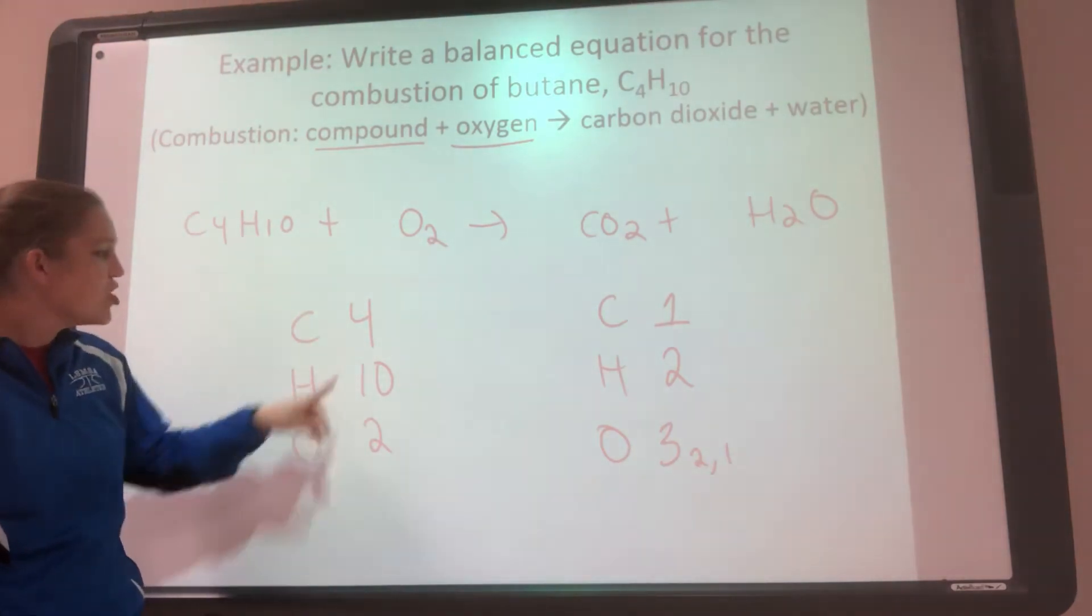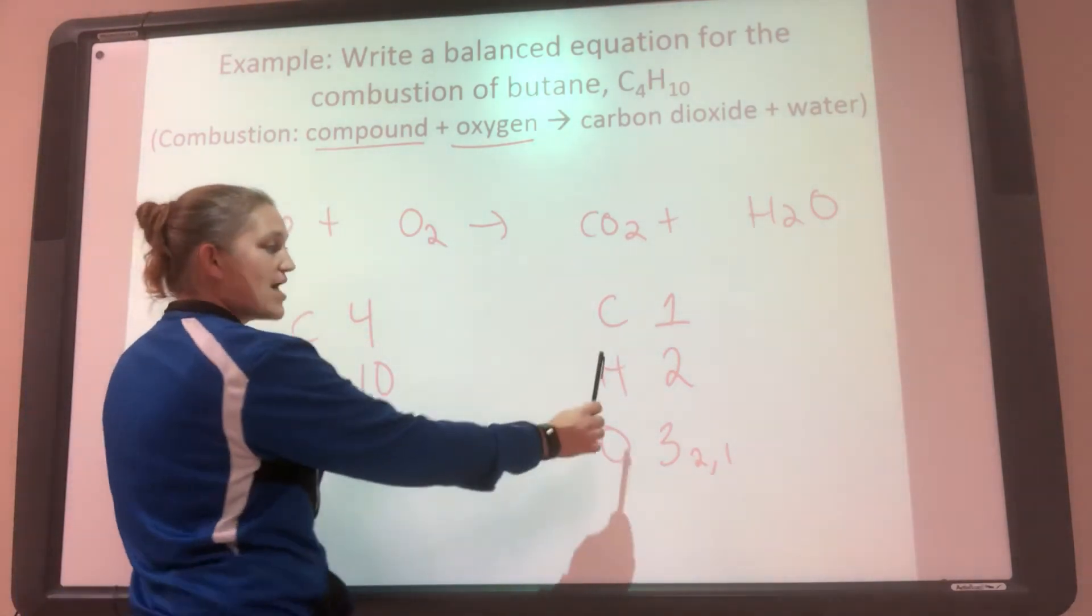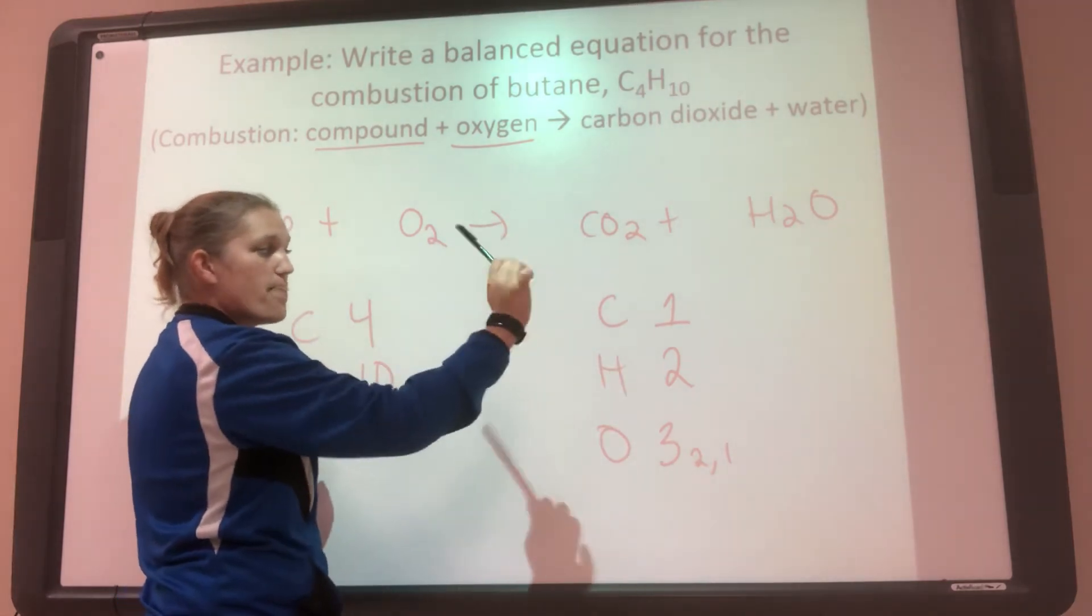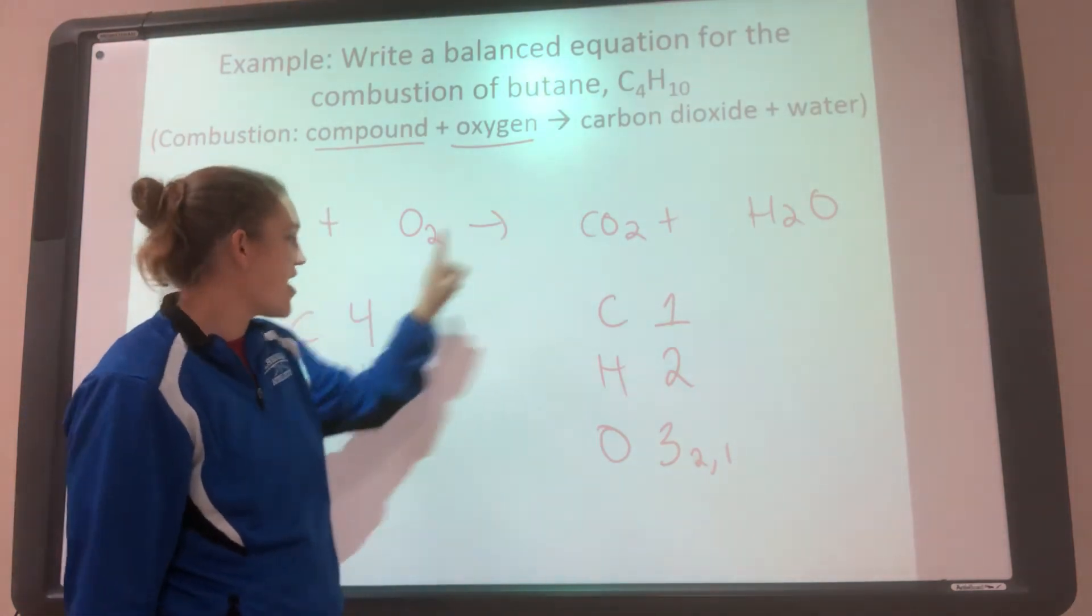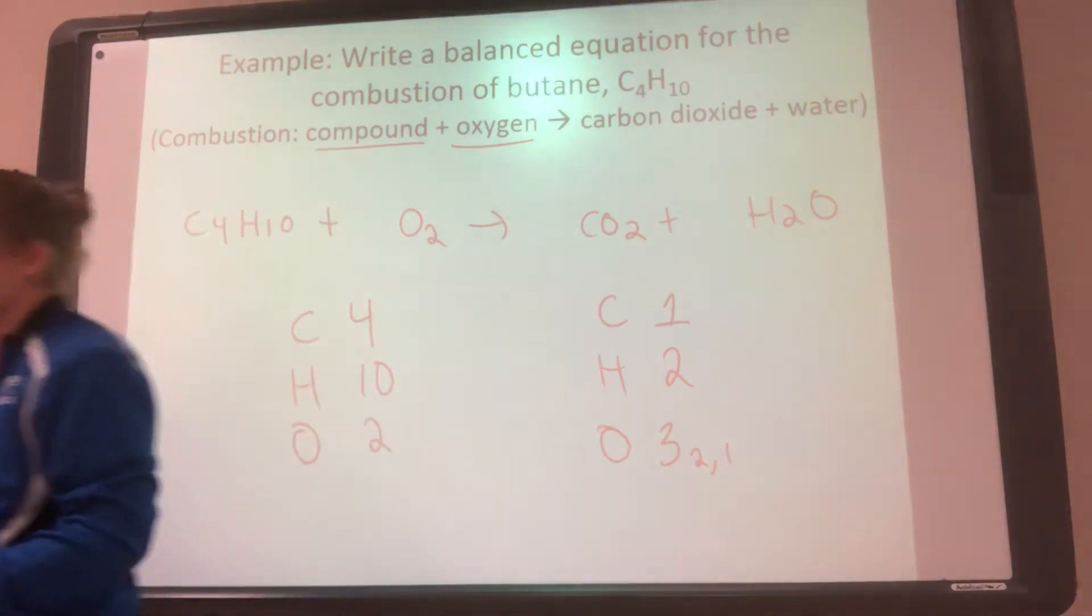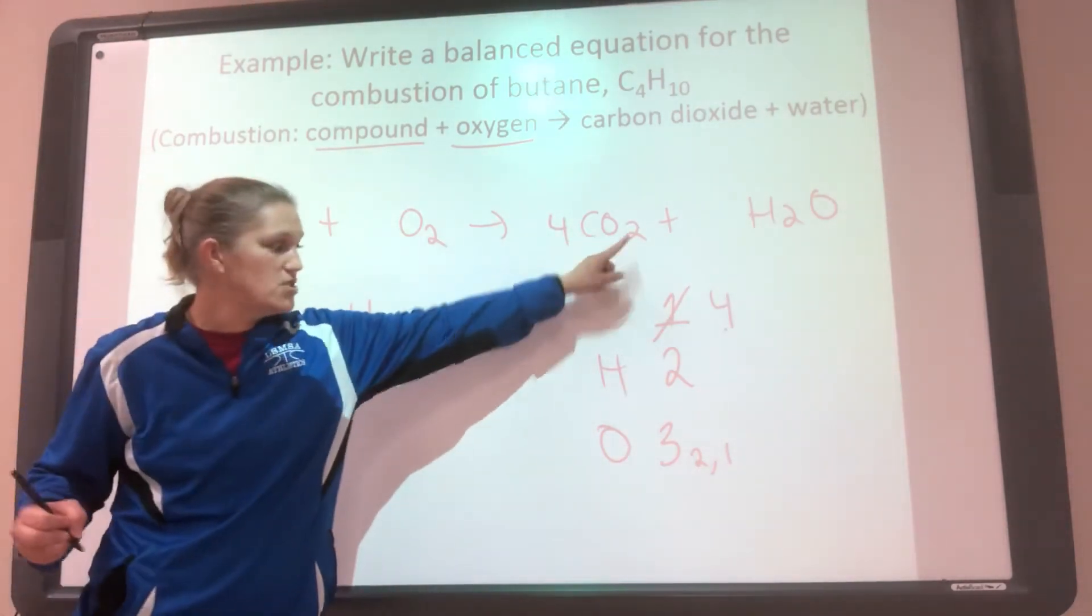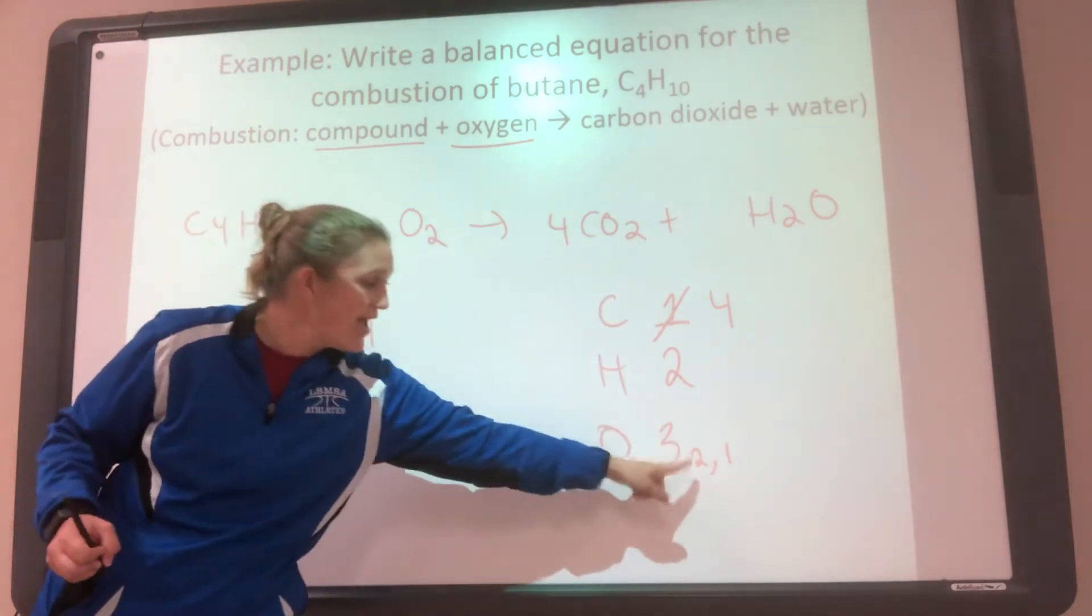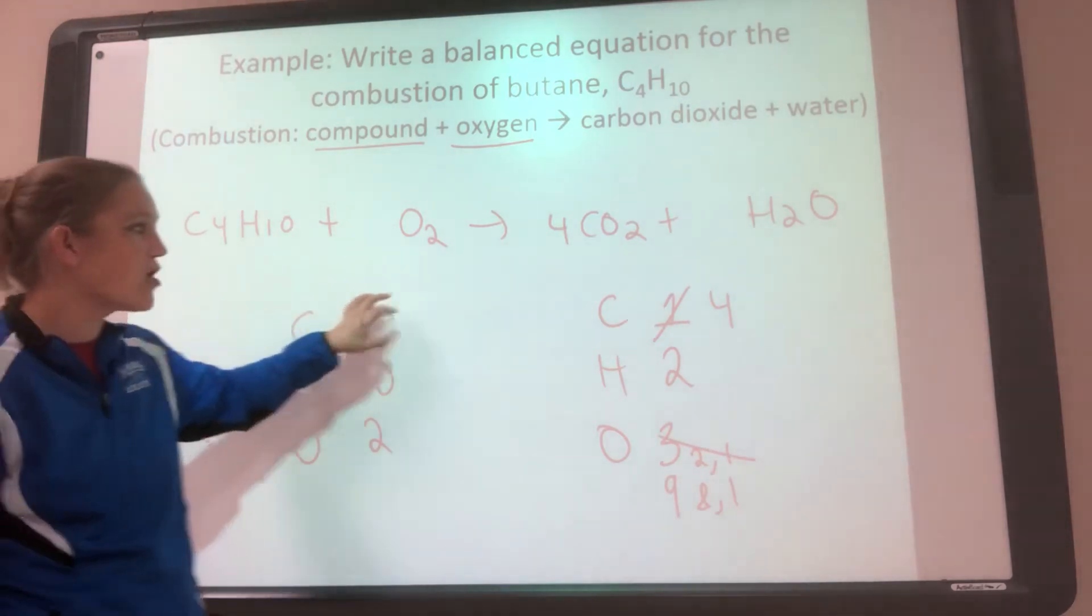So I have four carbons here and I have one here. So I need to get this side higher. So that means the coefficient is going to go on this side because I need more of them. So I have to figure out what number I put here so that I have the same amount. If there's a one here, what number would I put here to get to four? A four. So if I put a four here, now I have four carbons. But I also messed up my oxygens. Instead of it being two, now I have eight. So instead of it being two here, now that number is an eight. So now I have a total of nine oxygens.